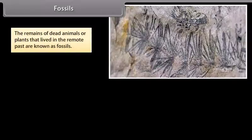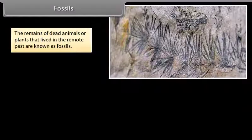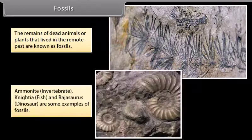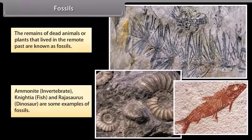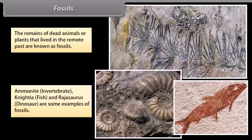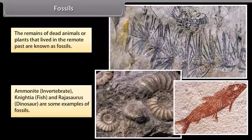Fossils: The remains of dead animals or plants that lived in the remote past are known as fossils. Ammonite invertebrate, Nicaea fish, and Rajasaurus dinosaur are some examples of fossils.